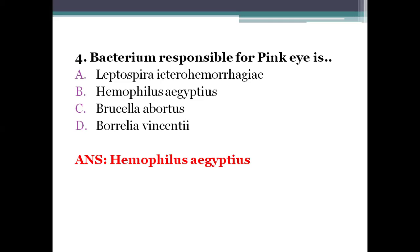Brazilian purpuric fever is characterized by conjunctivitis, high fever, vomiting, septicemia, and shock. Leptospira icterohaemorrhagiae causes leptospirosis — a zoonotic infection. Brucella abortus causes brucellosis, also a zoonotic infection transmitted from cattle to humans directly or indirectly via contaminated milk or animal products. Borrelia vincenti causes gingivostomatitis or oropharyngitis; it is a normal flora of the mouth and causes disease only opportunistically.